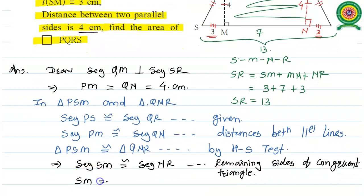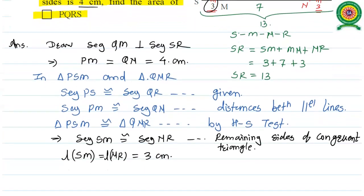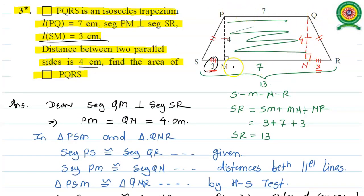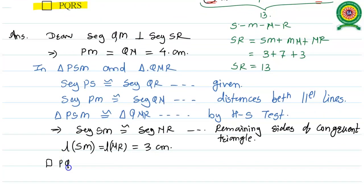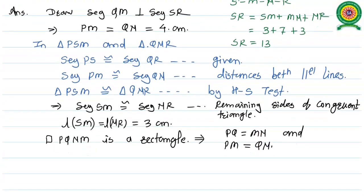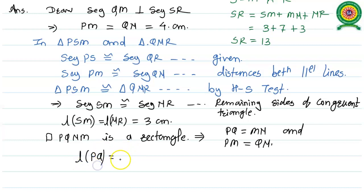Once SM and NR are congruent, they have the same length. The length of SM equals the length of NR, and both are equal to 3 cm as given. Quadrilateral PQNM is a rectangle, so pairs of opposite sides are parallel. That means PQ equals MN, and PM equals QN. Once PQ value is 7 units, the length of MN is also 7 cm.